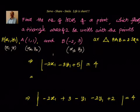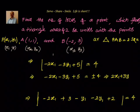Absolute value of this equals 4. Now we will take out the absolute value. We will write it as -2x1 - 3y1 + 5 equals plus or minus 4. Or we can write, multiplying with minus, 2x1 + 3y1 - 5 equals plus or minus 4.